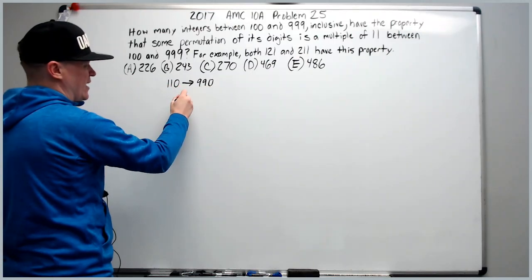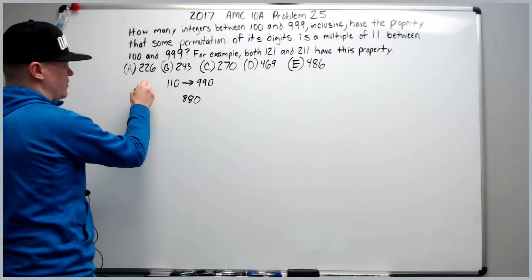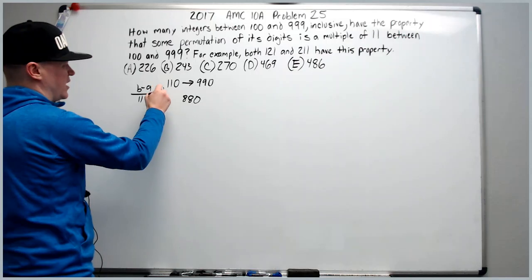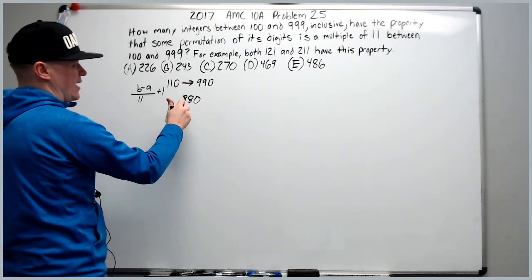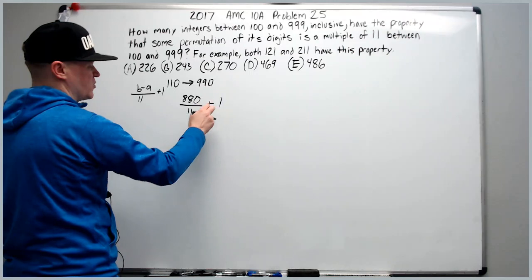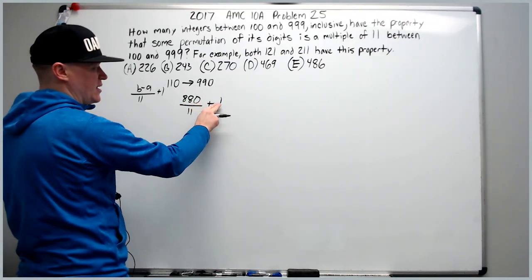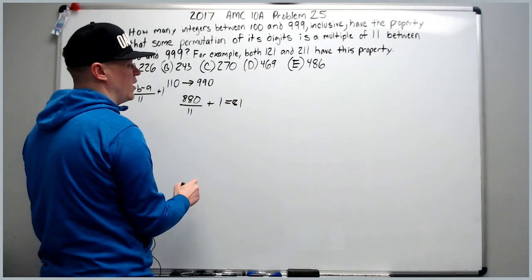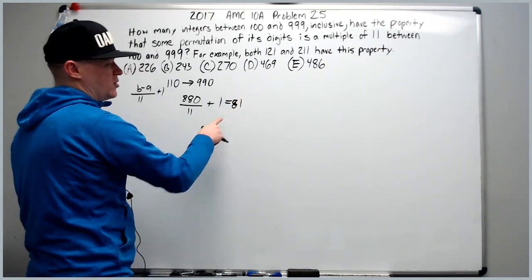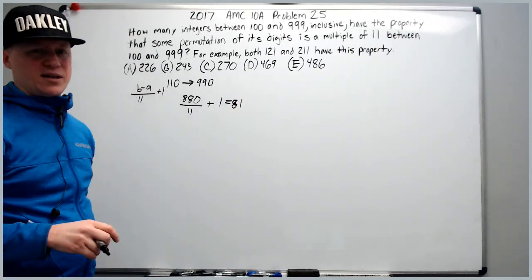So it must be from 110 to 990. Subtract to get 880. And we're going to use B minus A over 11 plus 1, a formula. B minus A, 880 over 11 plus 1. 11 goes into 88, 8 times, times 10 is 80 plus 1 is 81. There are 81 multiples of 11 between 100 and 999.